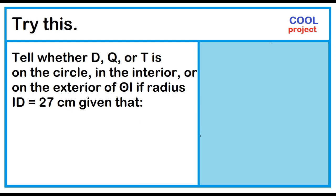Try this. Tell whether point T, point Q, or point T is on the circle, in the interior, or on the exterior of circle I. If radius ID is equal to 27 centimeters, given that ID is equal to 27 centimeters.